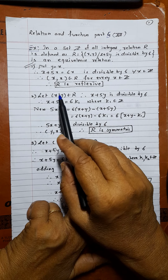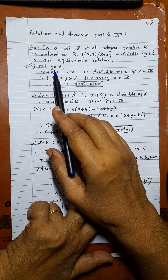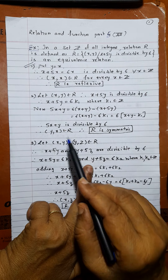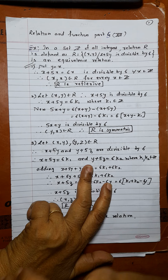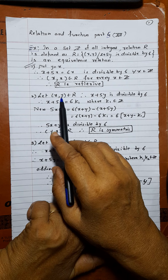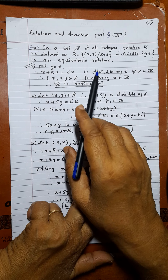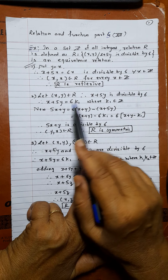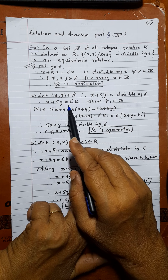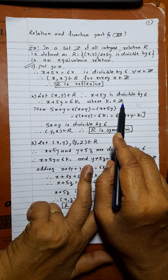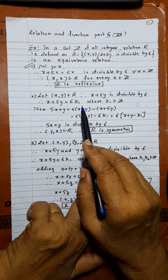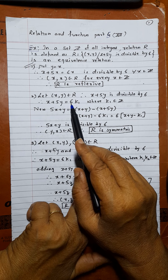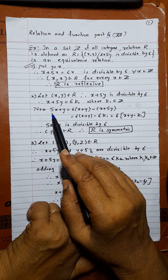For symmetric, the method is: suppose x comma y belongs to R and prove y comma x belongs to R. Since x comma y belongs to R, by definition x plus 5y is divisible by 6. Therefore, x plus 5y equals 6k₁, where k₁ is some integer. It must be an integer — not a fraction — for divisibility by 6 to hold.